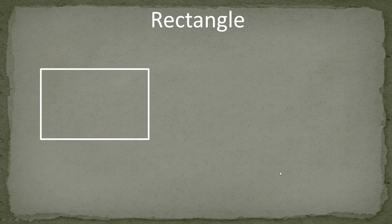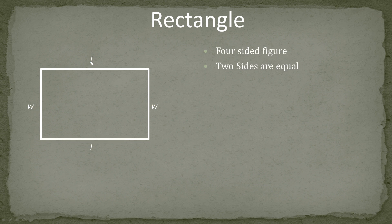The next shape is the rectangle. A rectangle also has four sides. Two of the sides are equal — not all four. This side we call the length and this side we call the width. It is okay to interchange length and width, because you could rotate the shape on its side. It doesn't matter specifically which one is the width and which one is the length.